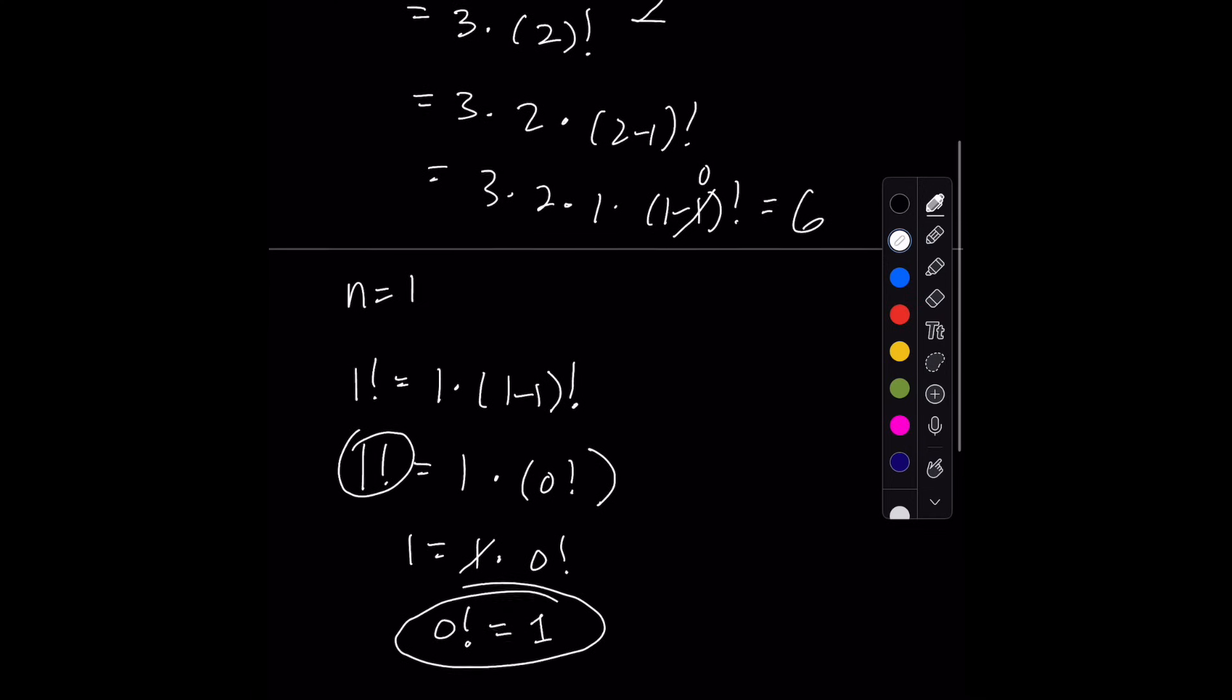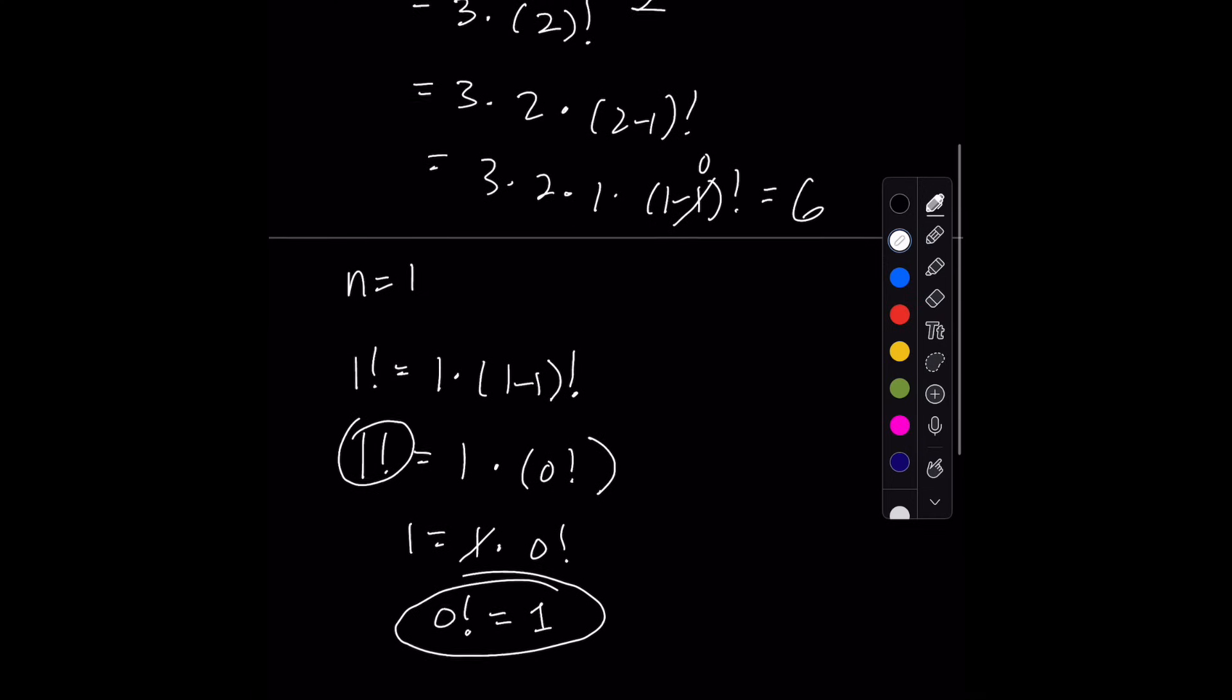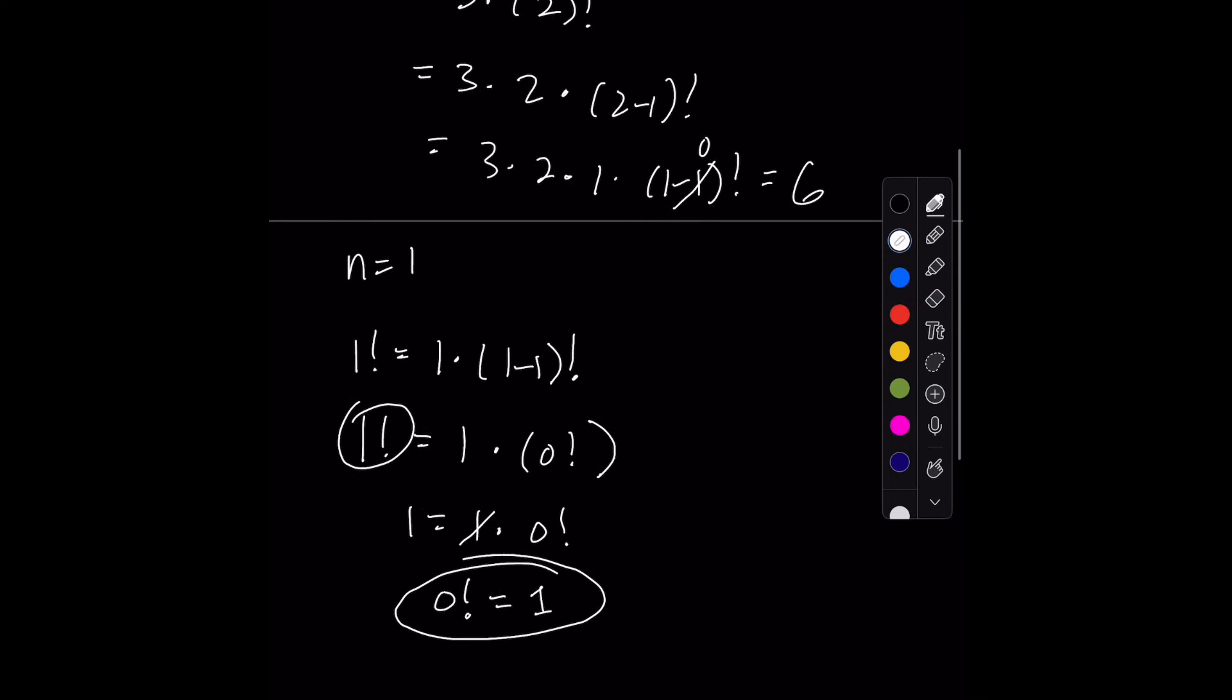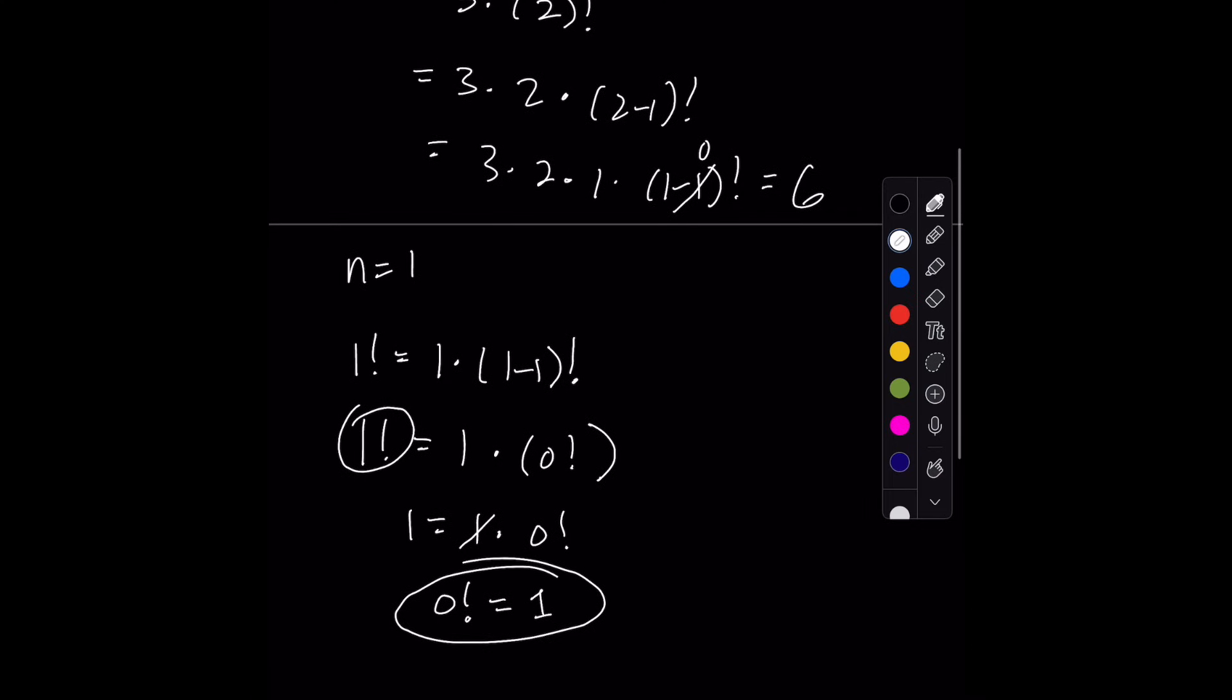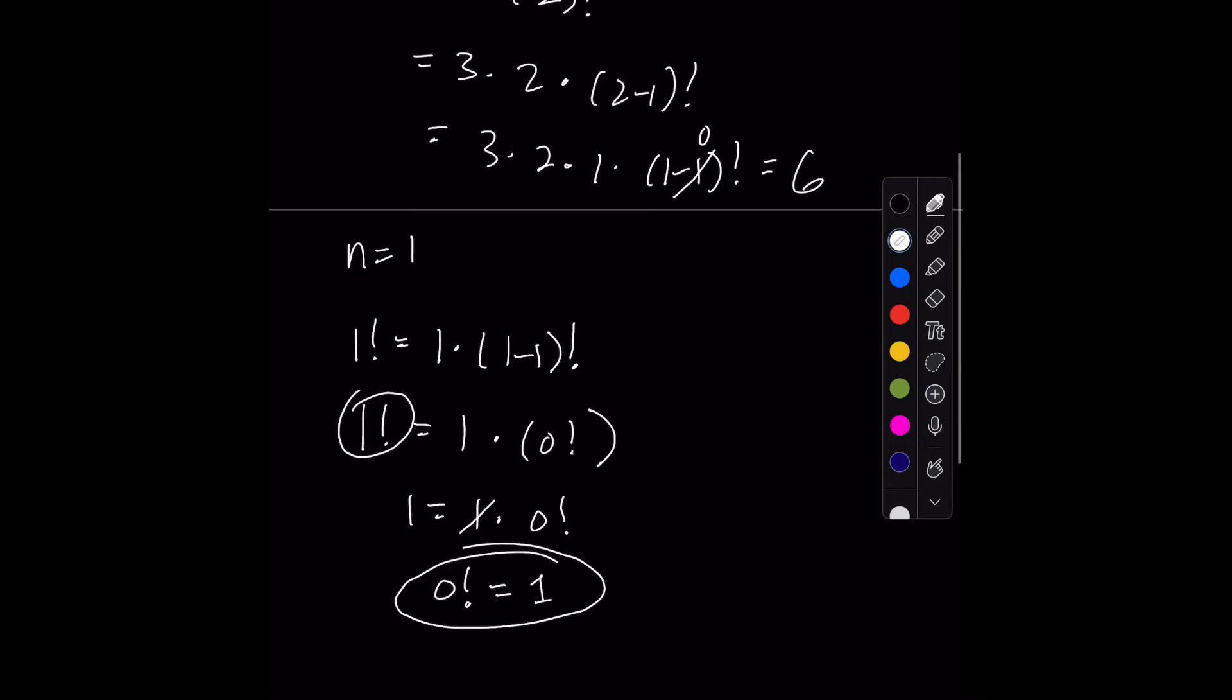Now, another logical way to think of it, if the mathematical way doesn't really make sense to you, is think of 0 as nothing. Factorials are a method in combinatorics and combinations and permutations for the different ways that you can arrange something. And how many different ways can you arrange 0? Only one way. You can only arrange nothing one way. So that's another way to look at it.